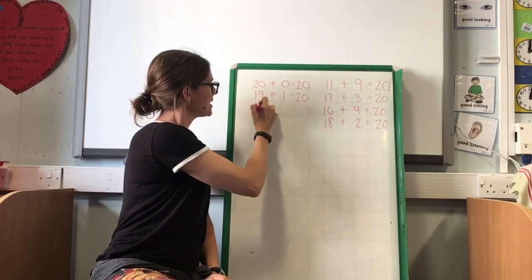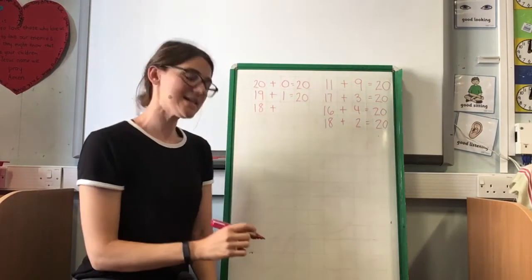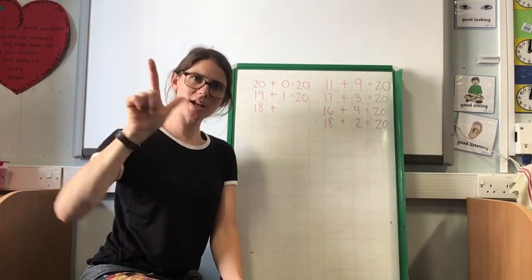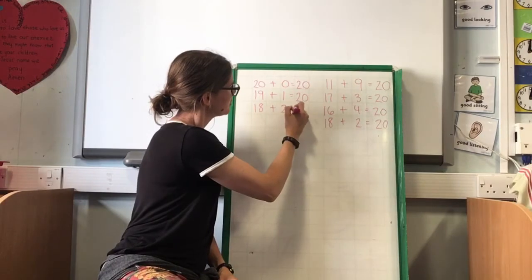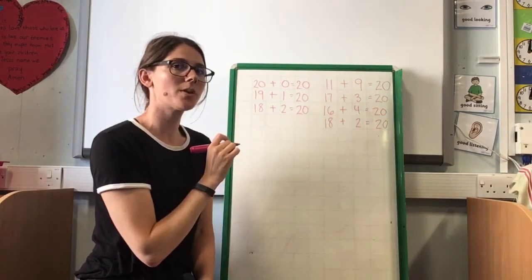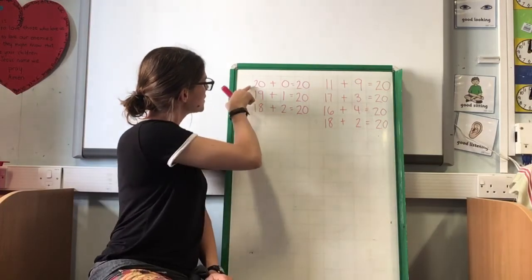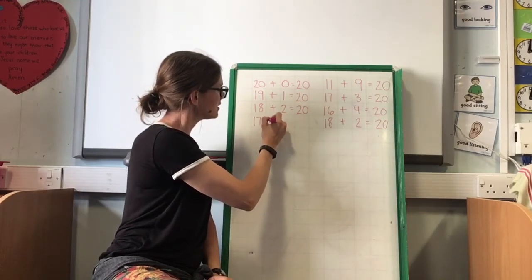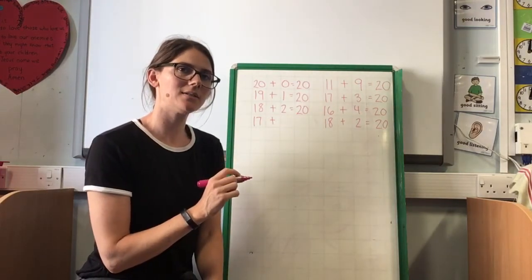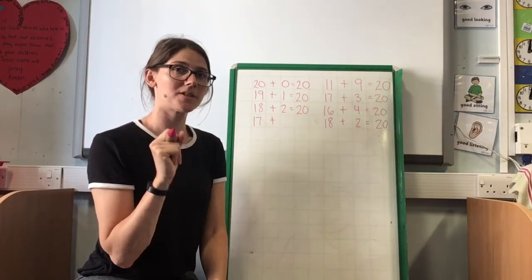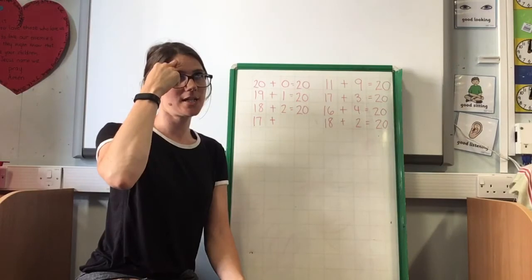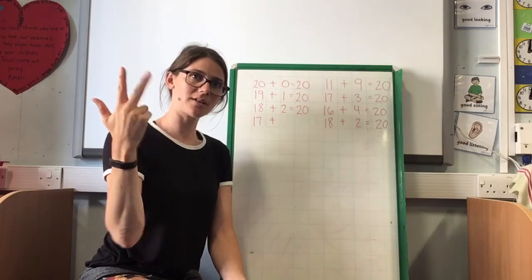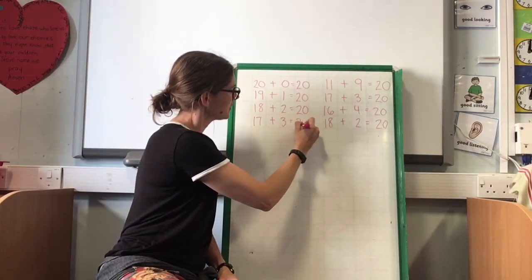What if I started with 18? Put 18 in my head: 18, 19, 20. How many more did I add? 2. We're going to do a couple more and then see if we can spot the pattern. We've done 20, 19, 18 — now 17. Add how many makes 20? Some of you may know straight off the bat; some may have to think. 17, 18, 19, 20 — how many more did I add? 3. Equals 20.